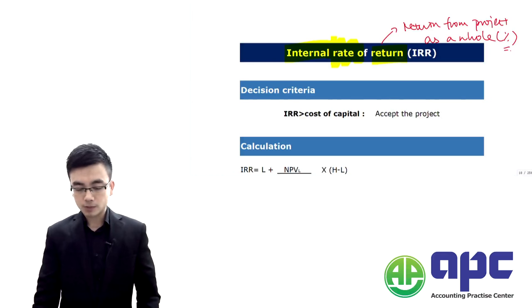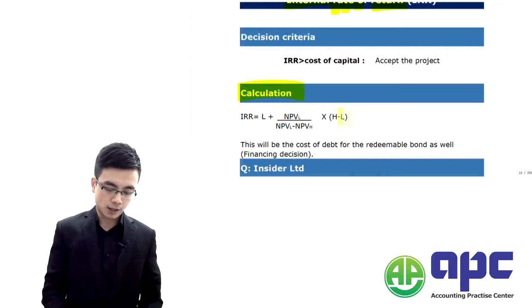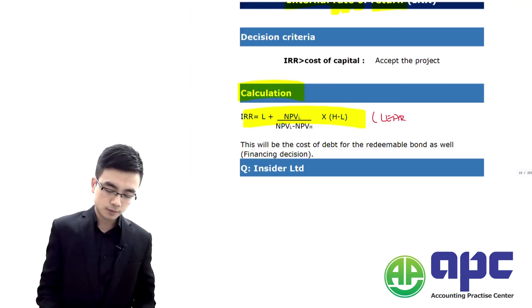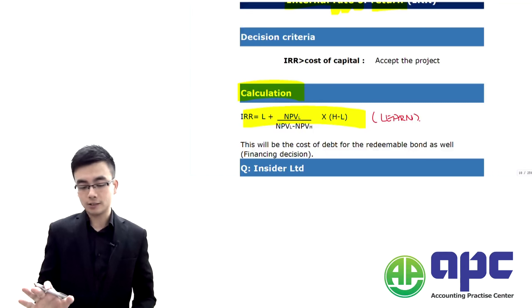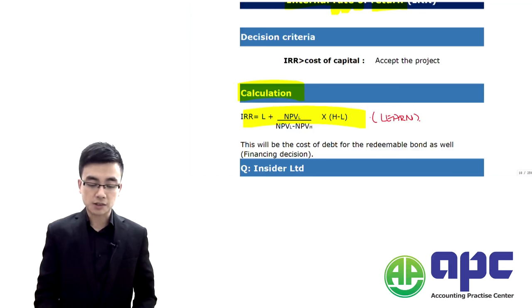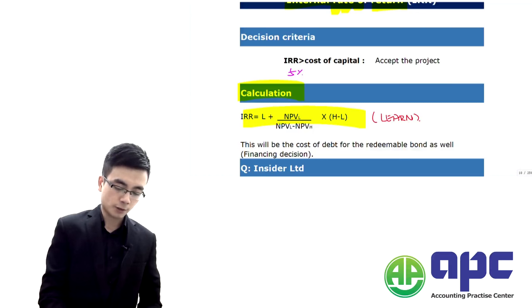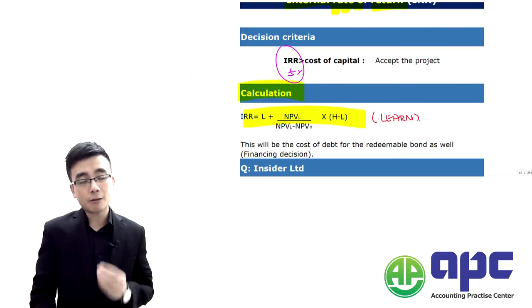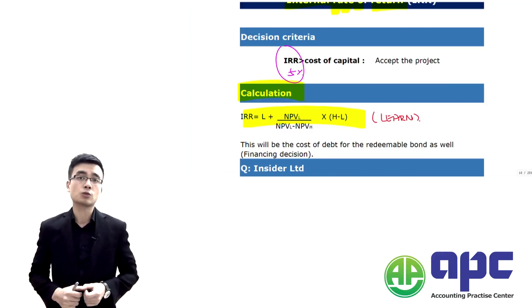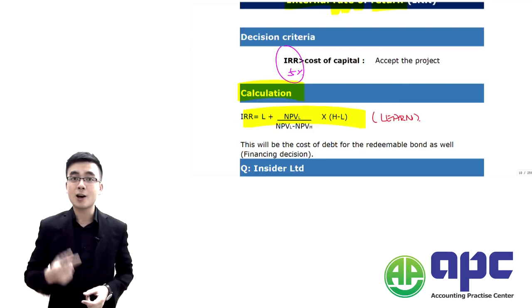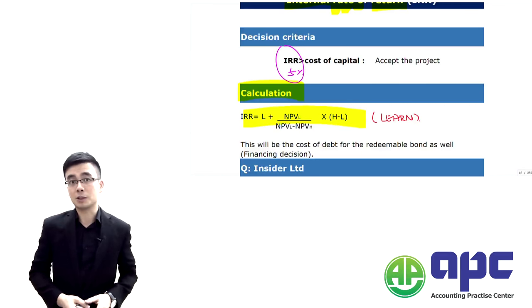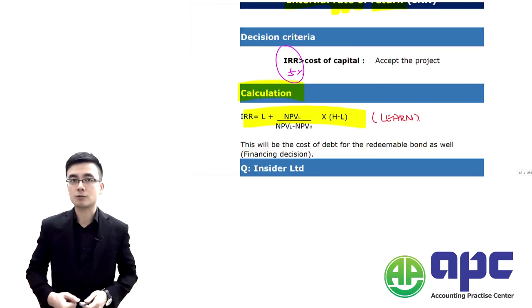That's the internal rate of return, and you can see the calculation of the IRR — you have to learn this. If I were to say this project will give the IRR of 5%, that 5% has not considered the costs of financing the project. You spent $100 out — where does this money come from? It could come from liability, meaning you borrow from family members and pay interest expense, or from equity finance, where you issue shares and pay dividends.